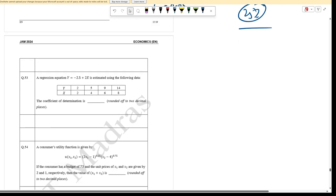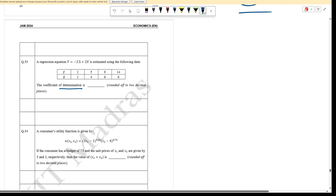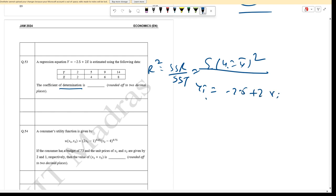Question 53: Given a regression line, find the coefficient of determination. R-squared equals SSR divided by SST, where SSR is the sum of squared residuals and SST is total sum of squares. Y_hat equals minus 2.5 plus 2X. The Y_hat values are: for X=2, Y_hat equals 1.5; for X=4, Y_hat equals 5.5.